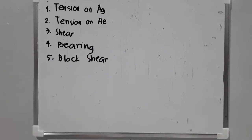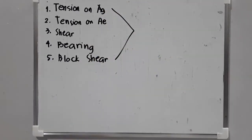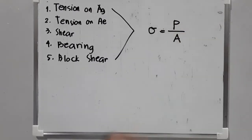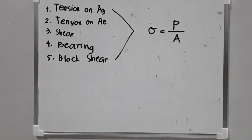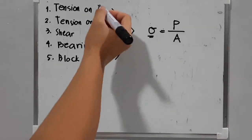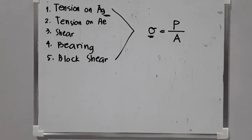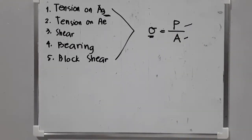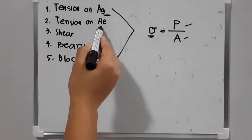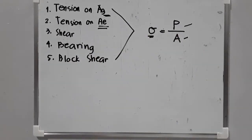Having these limit states, we are applying the principle of stress, which is stress equals force applied to a given area. For tension on gross area, the actual stress experienced on the gross area can be equated to the allowable tension stress. T is your tensile force and A is the gross area. Same with tension on effective net area — the stress is experienced by the effective net area, with force being the tension force and area being the effective net area.